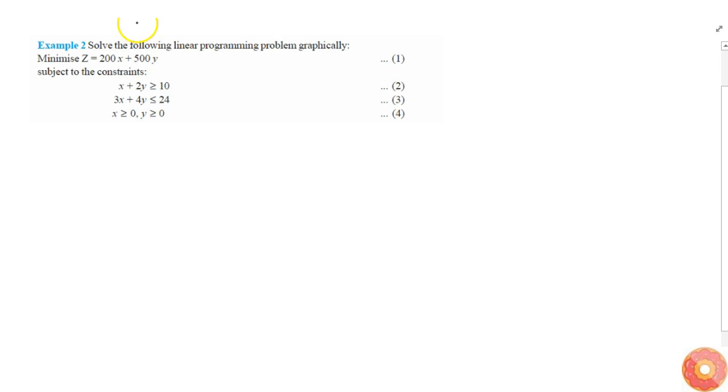In this question we are given few constraints and we are asked to minimize the value of Z, which is given by 200x plus 500y. With the given constraints we can find the bounded region R, and we know the value of maximum and minimum of any linear function.